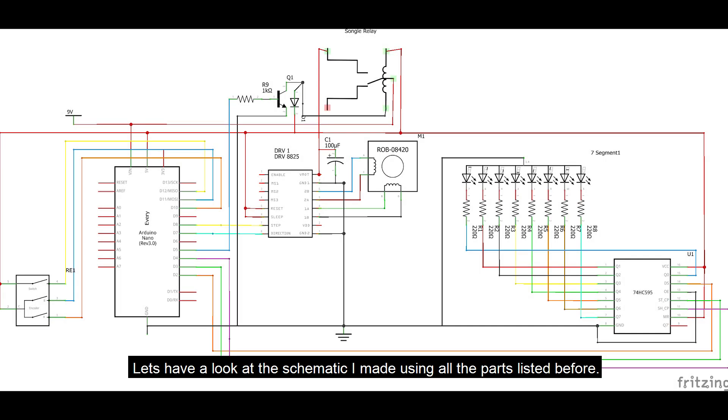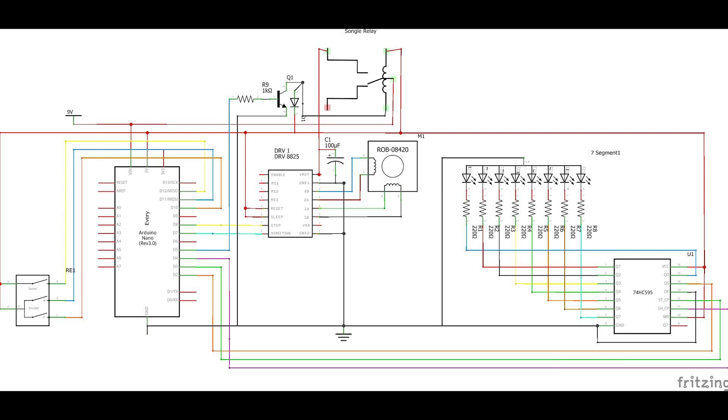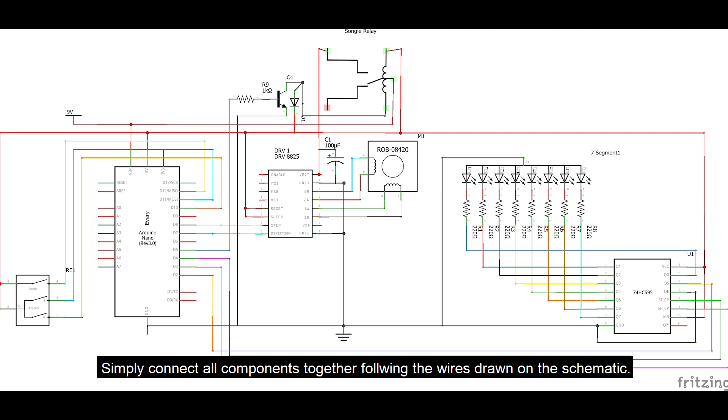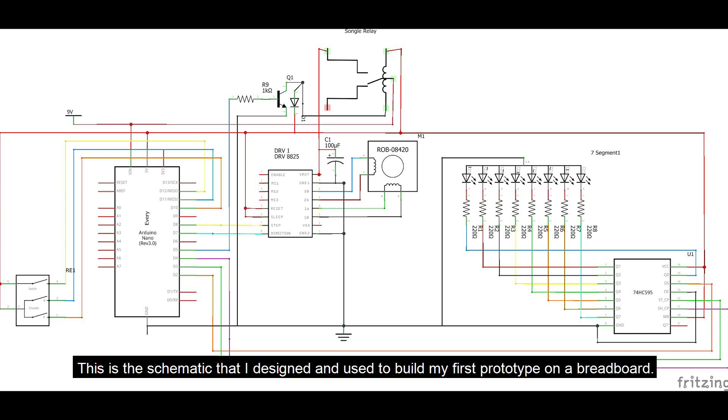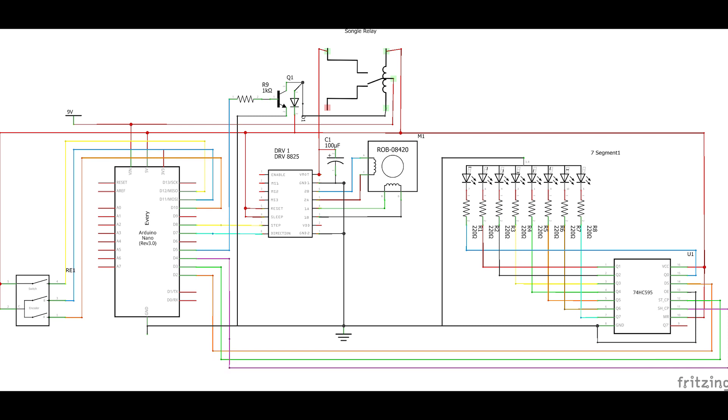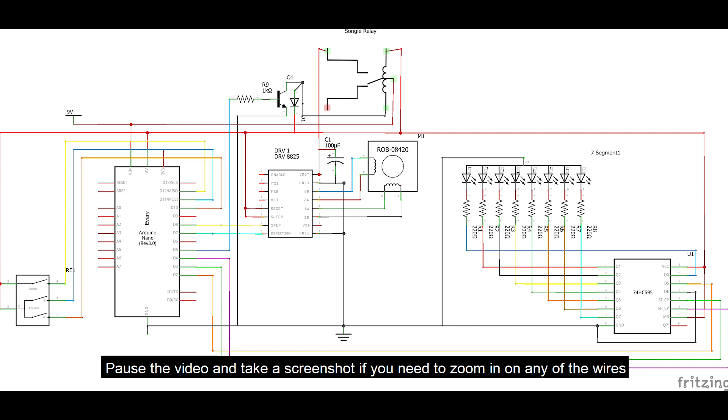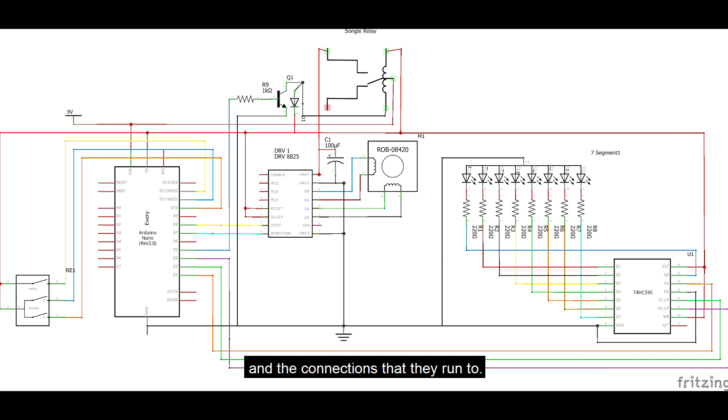Let's have a look at the schematic I made using all the parts listed before. Simply connect all components together following the wires drawn on the schematic. You may need to look up the pinout diagrams for any components that don't look familiar to you, such as the seven-segment display. This is the schematic that I designed and used to build my first prototype on a breadboard. Pause the video and take a screenshot if you need to zoom in on any of the wires and which connections that they run to. Now let's go look at my first prototype.